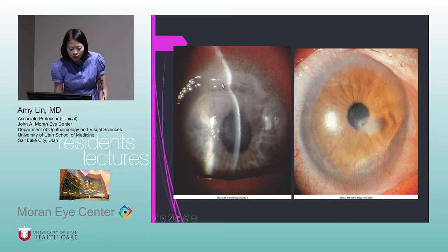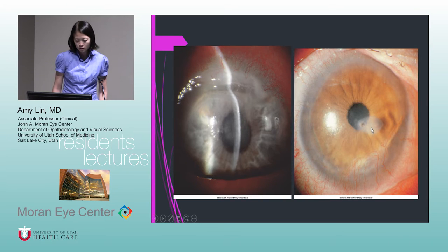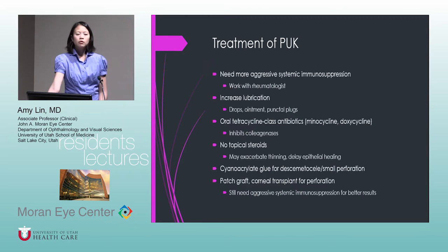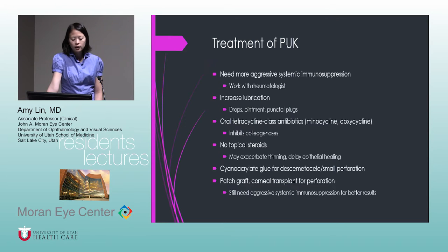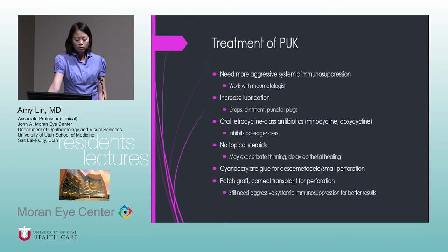This is a severe PUK in the periphery, with chronic inferior PUK showing many blood vessels growing in and an area of paracentral thinning. Treatment requires more aggressive systemic immunosuppression — work with their rheumatologist. Increase lubrication: drops, ointment, punctal plugs. Oral tetracycline-class antibiotics such as minocycline and doxycycline can inhibit collagenases and prevent further stromal thinning. Classically, topical steroids are not recommended as they can exacerbate thinning and delay epithelial healing. For Descemet's exposure or small perforation, consider gluing; for larger perforation, patch graft or corneal transplant.